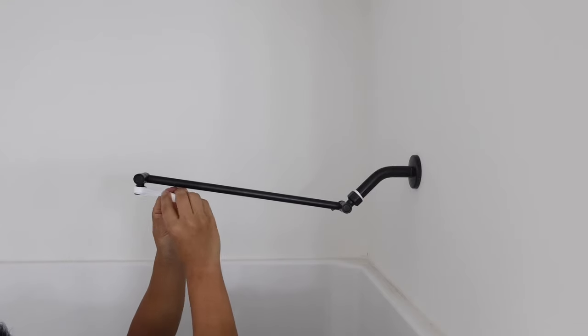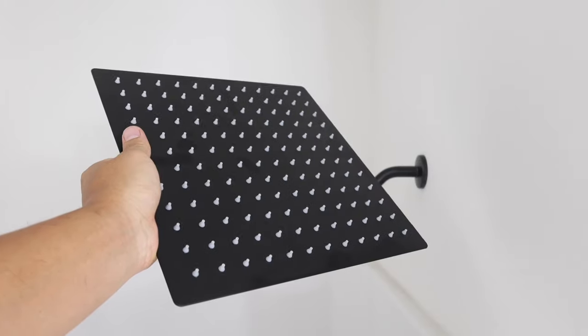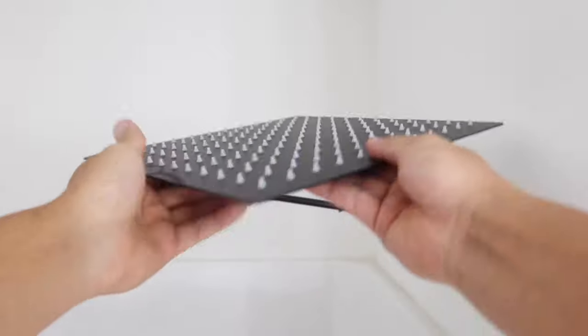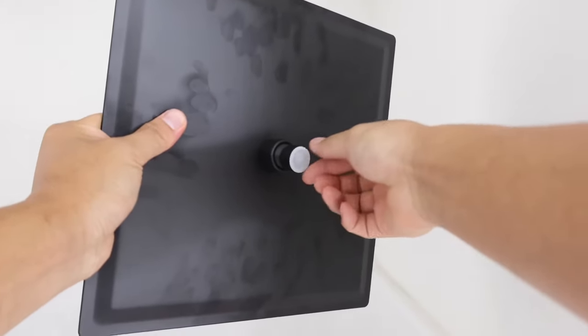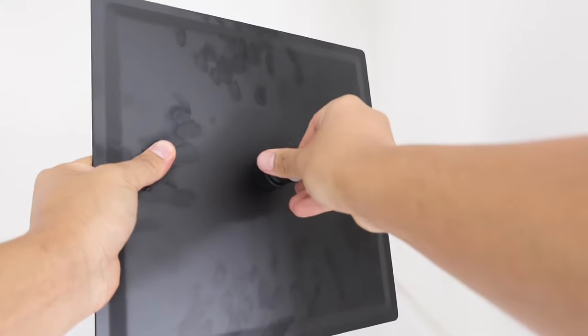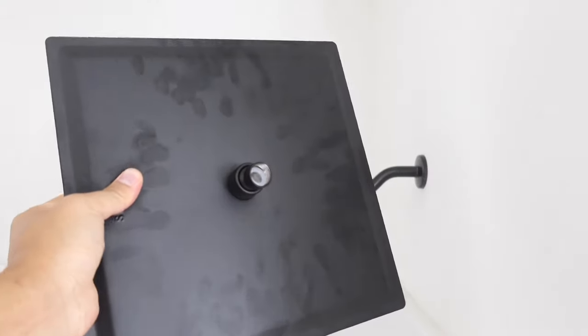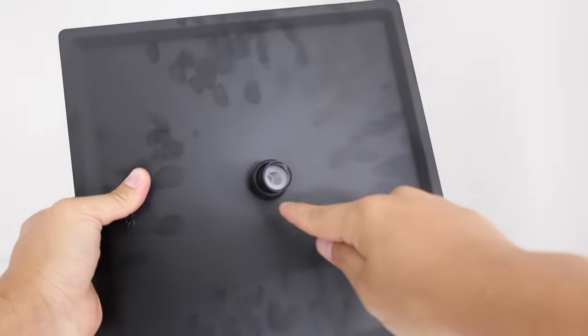Next go ahead and grab our rain shower head, turn it over. What we're going to need to do now is go ahead and twist and remove this little plastic piece right here. This will expose the little water hole.